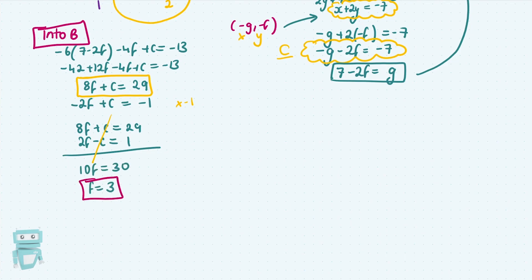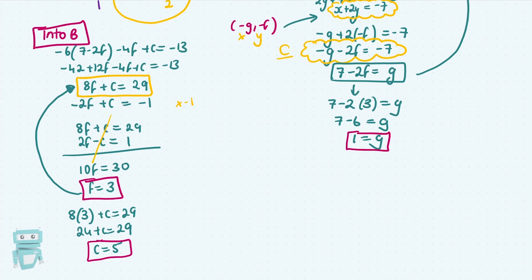F = 3. Now work out our C by subbing this in. C = 5. We'll not get cocky, take our time, and then to work out G we have it over here. G = 1.